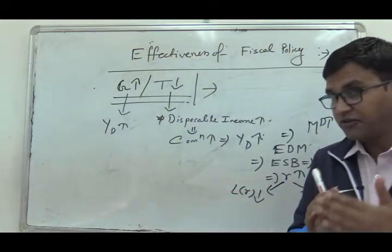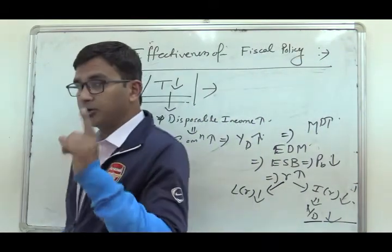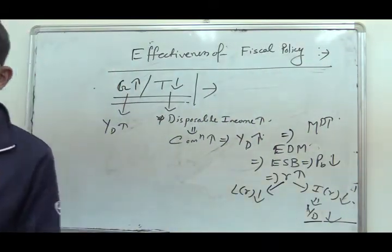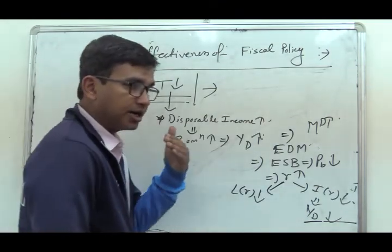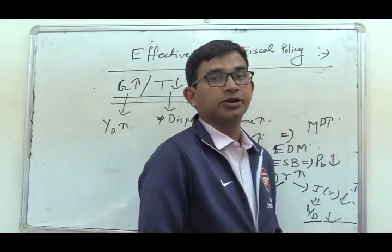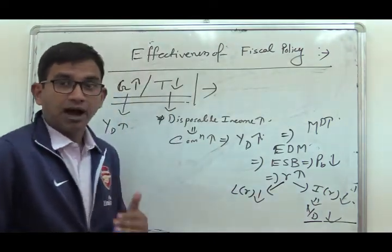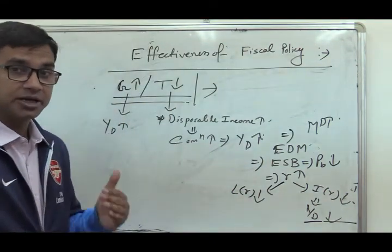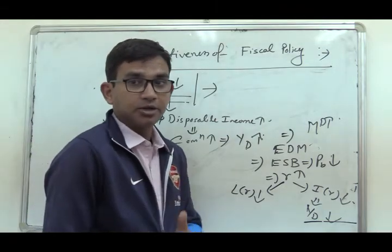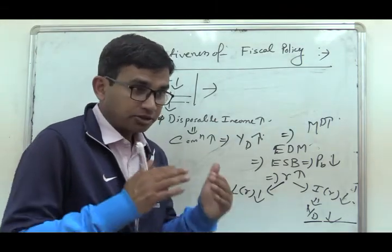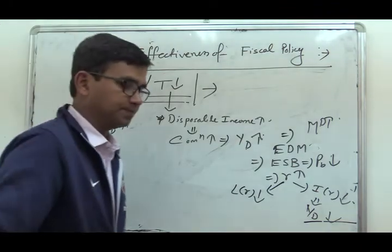The effectiveness of fiscal policy depends on two things: number one, how sensitively demand for money responds to a change in rate of interest, and number two, how sensitive private investment is to a change in rate of interest. These two things determine the effectiveness of fiscal policy.